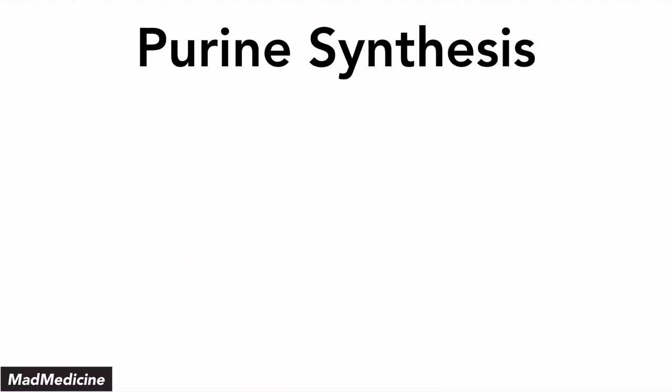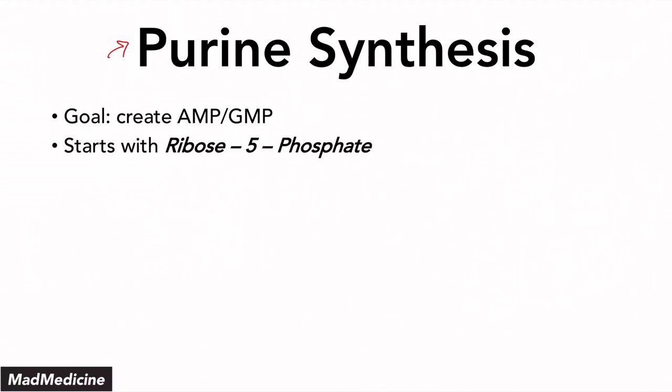We've talked about purine synthesis already in a previous lecture that's dedicated completely to purine synthesis. It's only the high-yield content, essentially everything you need to know, and it's located on our YouTube channel, so definitely go check that out. But purine synthesis — the main goal is to create AMP and GMP. That's essentially what you're trying to do when you're synthesizing purines, and it's going to start with a substrate called ribose 5-phosphate. This comes from the HMP shunt — pretty high yield, don't forget that.